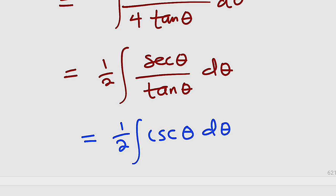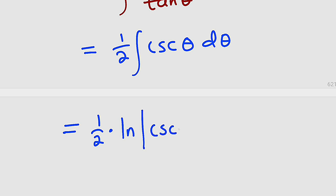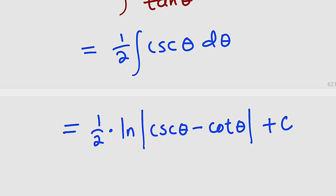So this equals 1 divided by 2 times the integral of cosecant theta d theta. We have a formula for integrating cosecant theta. With our constant 1 divided by 2, we multiply by the natural log of the absolute value of cosecant theta minus cotangent theta. Remember to add the constant of integration.